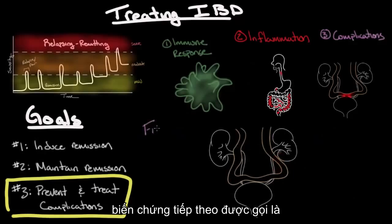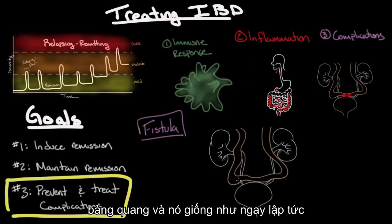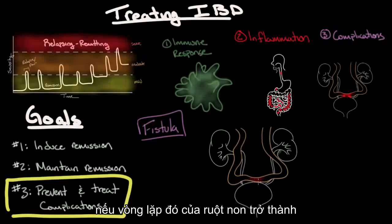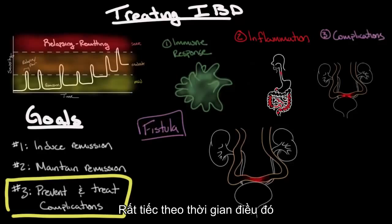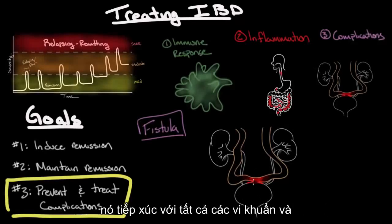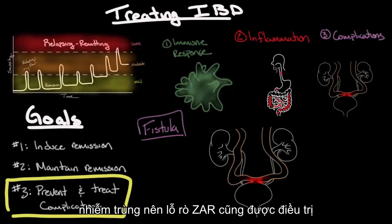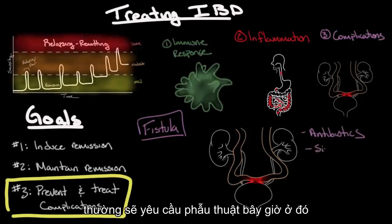The next complication is a fistula — a tunnel between two structures that aren't supposed to be connected. For example, if a loop of small bowel becomes inflamed with Crohn's disease right next to the bladder, that inflammation can extend through the bladder wall and form a tunnel into it. The bladder is usually a sterile space, so it becomes exposed to bacteria and inflammation from the small intestine, causing a serious bladder infection. Fistulas are treated with antibiotics and typically require surgery.